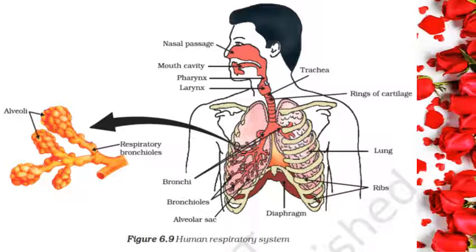Animals have evolved different organs for the uptake of oxygen from the environment and for getting rid of the carbon dioxide produced. Terrestrial animals can breathe the oxygen in the atmosphere, but animals that live in water need to use the oxygen dissolved in water. Since the amount of dissolved oxygen is fairly low compared to oxygen in the air, the rate of breathing in aquatic animals is much faster than in terrestrial organisms. Fishes take in water through their mouth and force it past the gills where the dissolved oxygen is taken up by the blood.